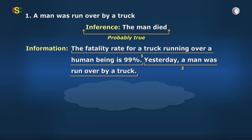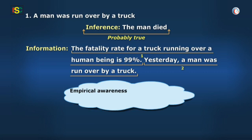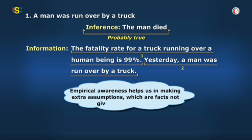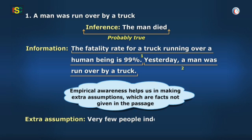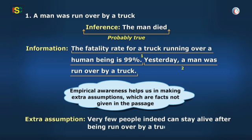This is because empirical awareness helps us in making extra assumptions, which are facts not given in the passage. Here, the extra assumption is that very few people indeed can stay alive after being run over by a truck.